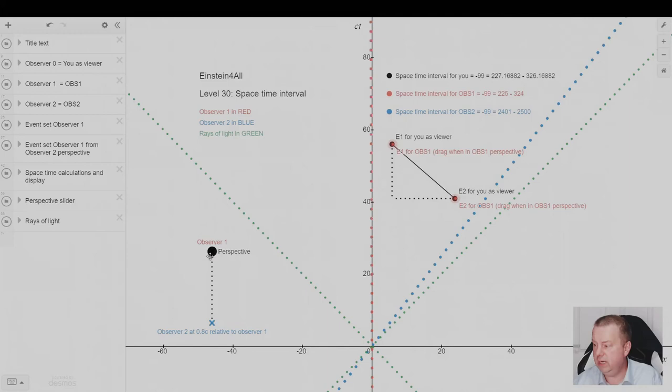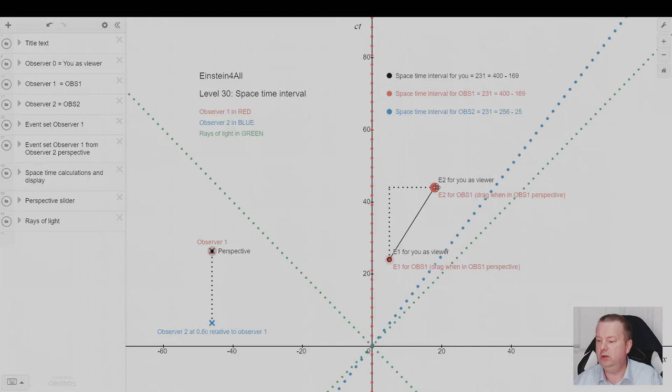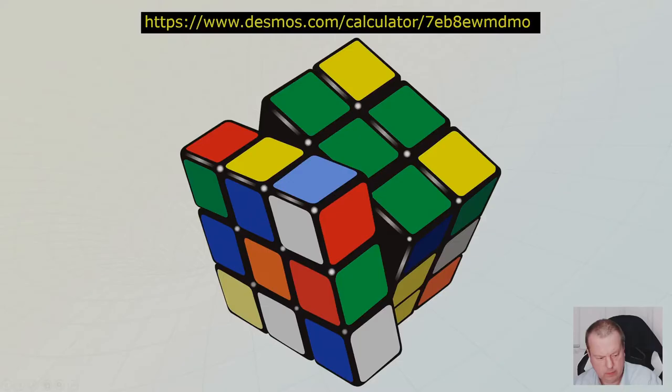We, observer one, observer two, and no matter what we are, it's minus 99 for you. And you can go online and do this yourself. We go back to this one. Yeah, there we are.